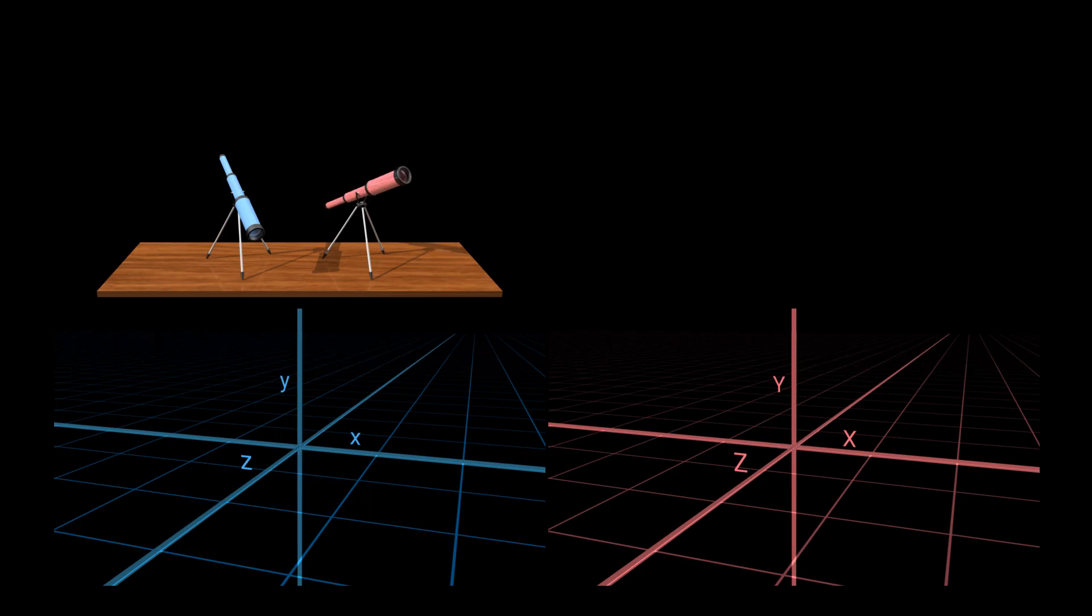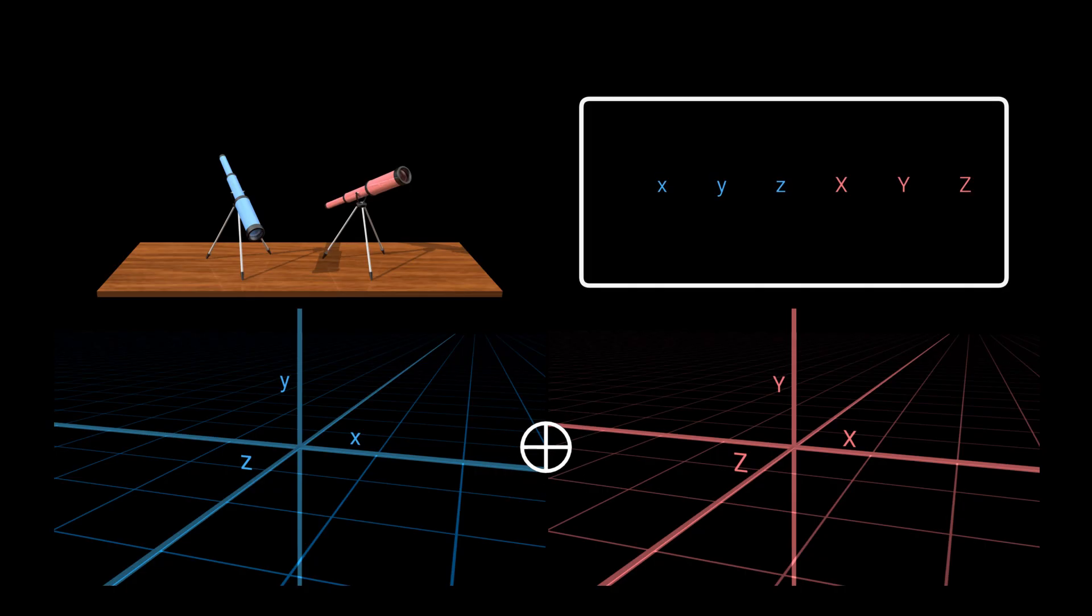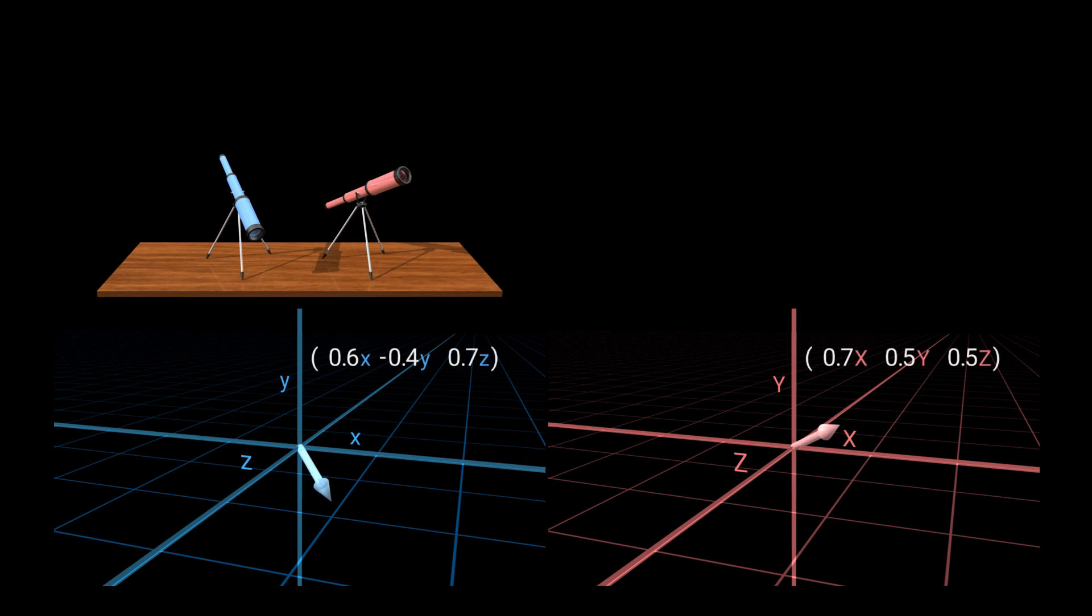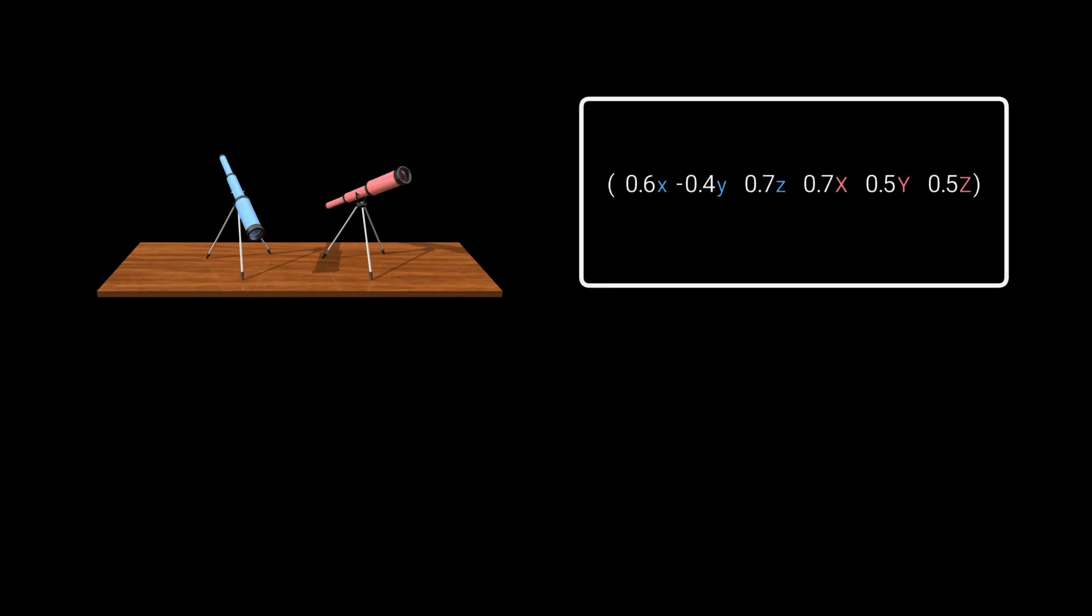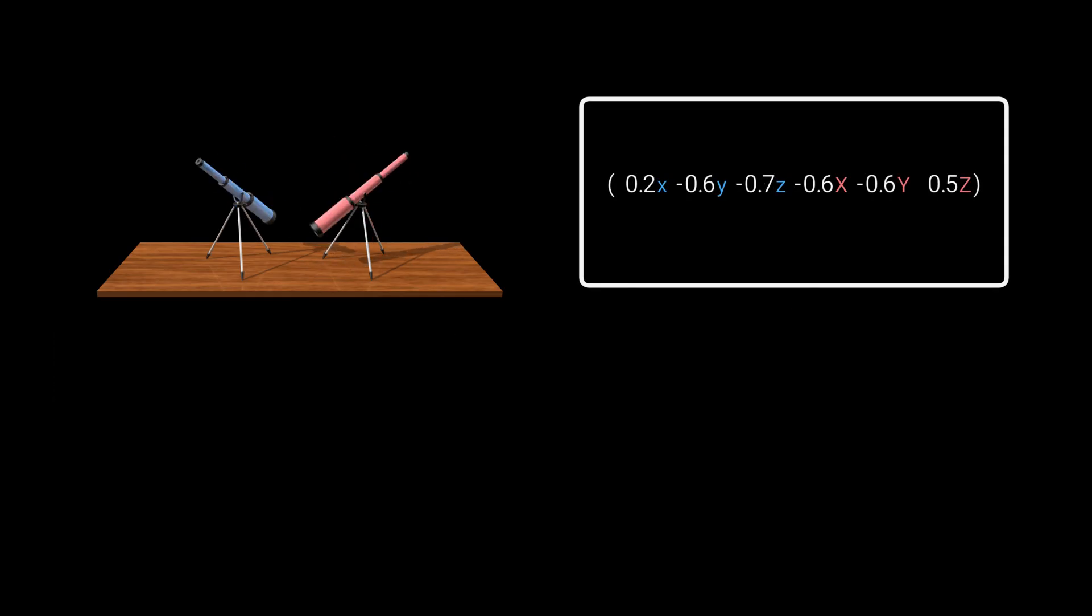We can combine the two spaces using what's called a direct sum. This results in a new six-dimensional space. We can think of the first three axes as coming from the blue space and the last three from the red space. Here is an example vector. The first three components control the blue telescope, and the last three control the red telescope. So we have two options. Either treat the telescopes as two separate physical systems, each specified by its own three-dimensional vector, or we can treat them as a single, combined system whose state is specified by one six-dimensional vector. These two options are equivalent, so we can choose whatever works best for us.